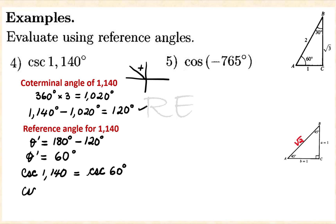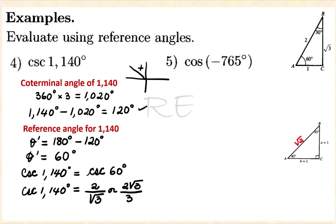Cosecant is the hypotenuse over the opposite, so it's 2 over square root of 3, which when rationalized is 2 square root of 3 over 3.